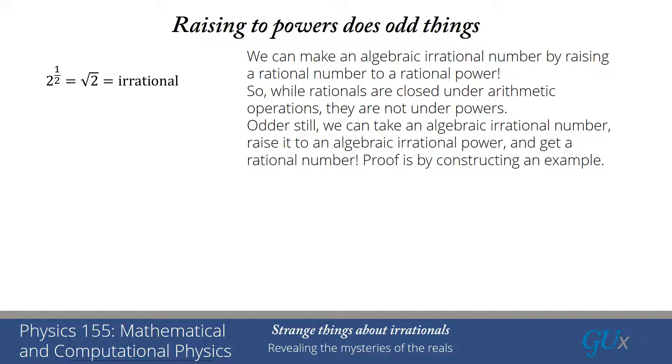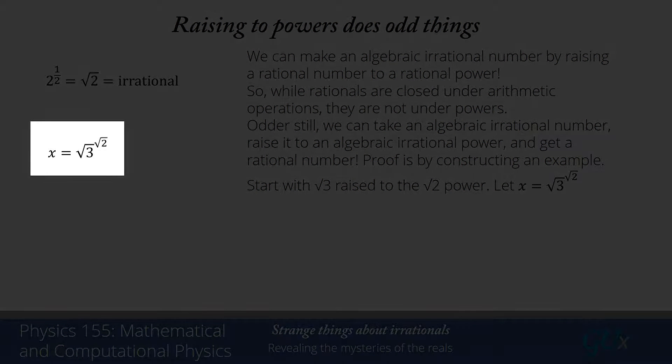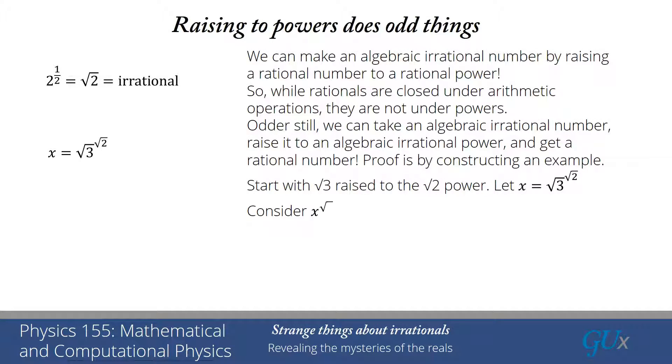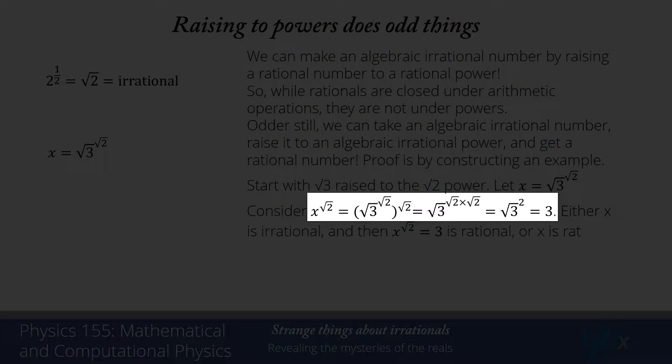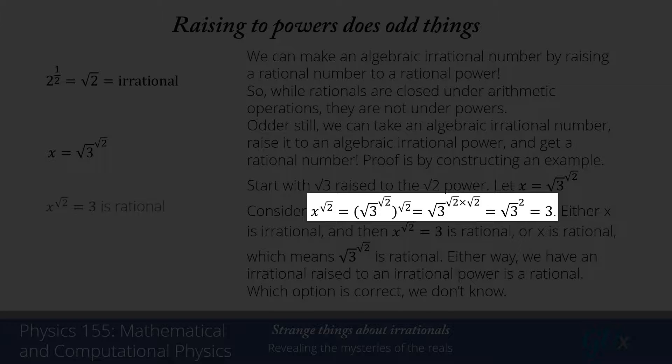The way that we prove this can occur is by constructing an explicit example. Let's start with the number square root of 3, which is an algebraic irrational number, and let's raise it to the square root of 2 power, which is also an algebraic irrational number, and let's call that number x. The next thing we do is take x and raise it to the square root of 2 power. I write x is square root of 3 raised to the square root of 2, and then take the whole thing and raise that to the square root of 2 power. By using the law of how I raise things to a power, that whole thing is square root of 3 raised to the square root of 2 times square root of 2 power. But square root of 2 times square root of 2 is just equal to 2. So that whole thing will equal square root of 3 squared, which is just equal to 3.